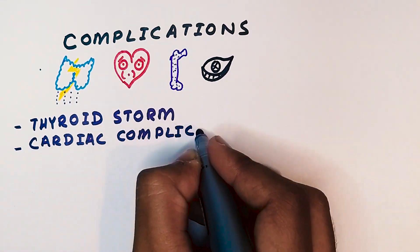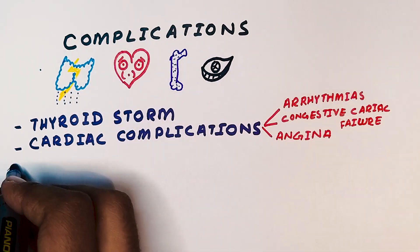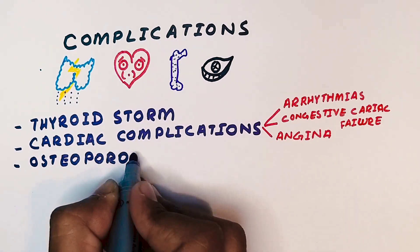Hyperthyroidism can cause cardiac complications such as arrhythmias, congestive heart failure, and angina. It can also lead to osteoporosis, which can result in bone fractures.